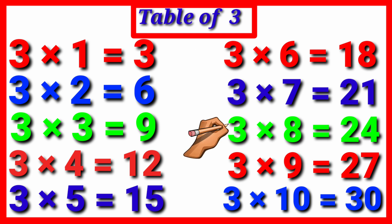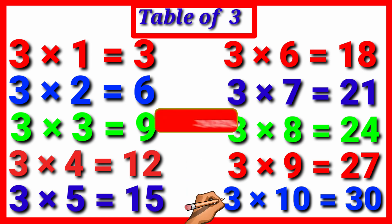Three eights are twenty-four. Three nines are twenty-seven. Three tens are thirty. Thank you for watching and subscribe.